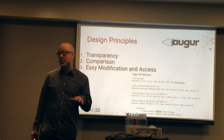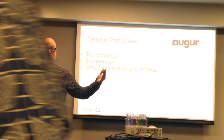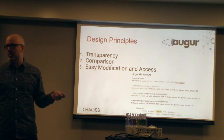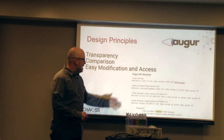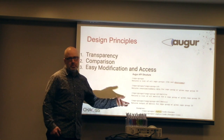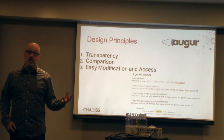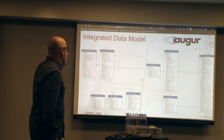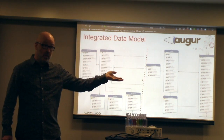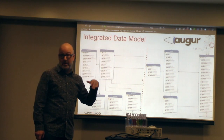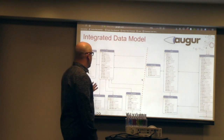When designing metrics in Augur, we have three core design principles. First is transparency, so you can see through the metric to the CHAOSS definition and understand where that metric comes from. Second is comparison — the reason we use GHTorrent is so you don't have to clone every single repository on GitHub to compare your work with something else. Third is easy modification and access — we have an API structured by repos and repo groups, which are simply collections of repositories you want to look at together.